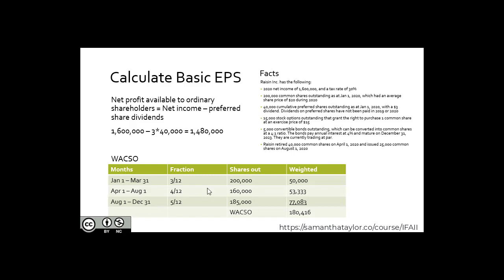Then on August 1st, nothing else happened for the rest of the year. From August 1st — August, September, October, November, December — for five-twelfths out of the year, they issued 25,000 common shares. So 160,000 plus 25,000 equals 185,000. Five-twelfths times 185,000 equals 77,083. Adding up our weighted average shares outstanding for the year, we have a WASO of 180,416.